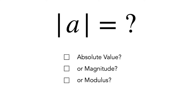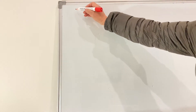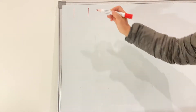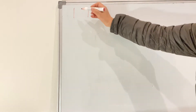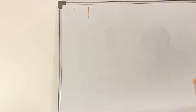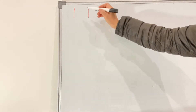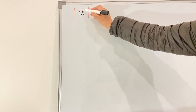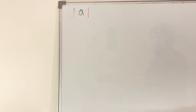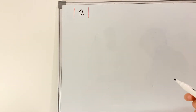Today we're talking about the symbol of two strokes in math — what's the meaning of that? Most people will say this is the absolute value of a. But some people might say this is the modulus of complex numbers, or this is the magnitude of a vector. So what is the true meaning? It depends on whether a represents a number, a vector, or a complex number.